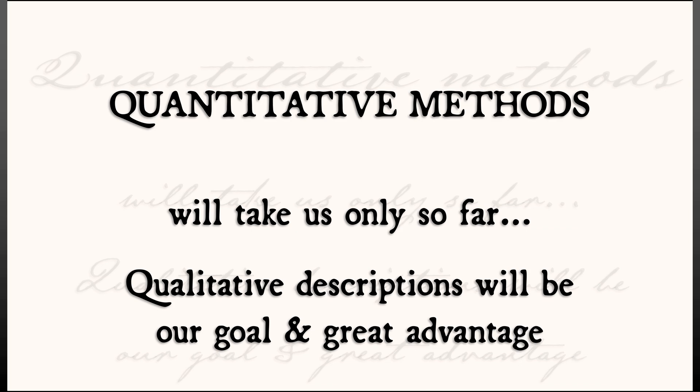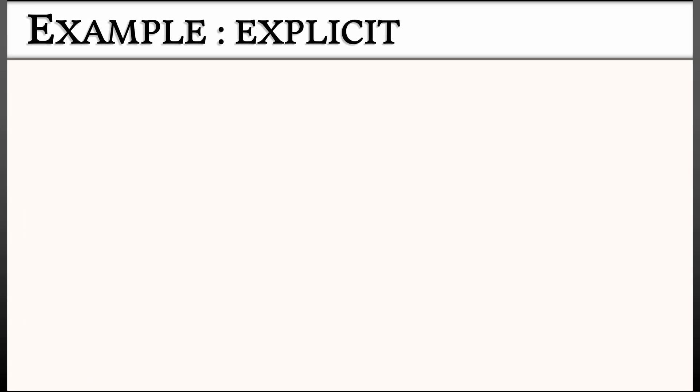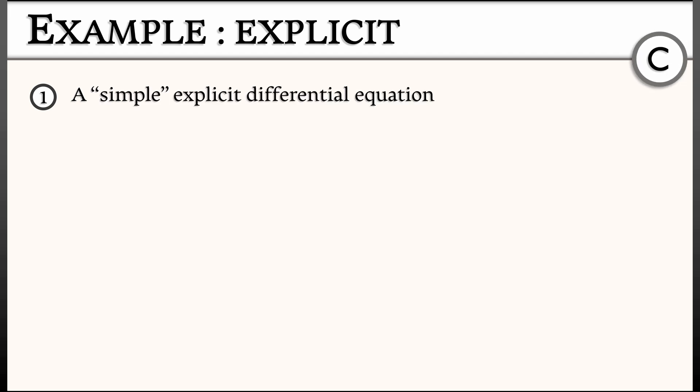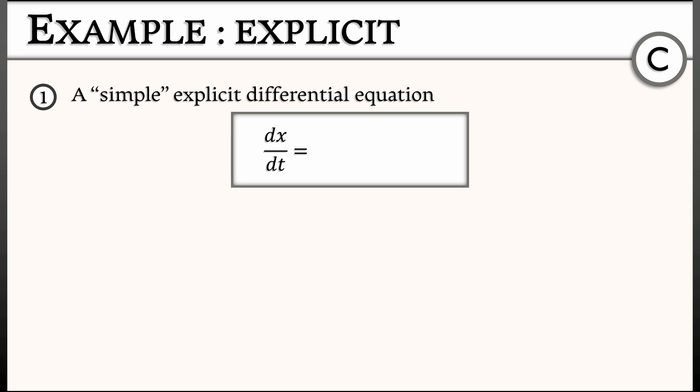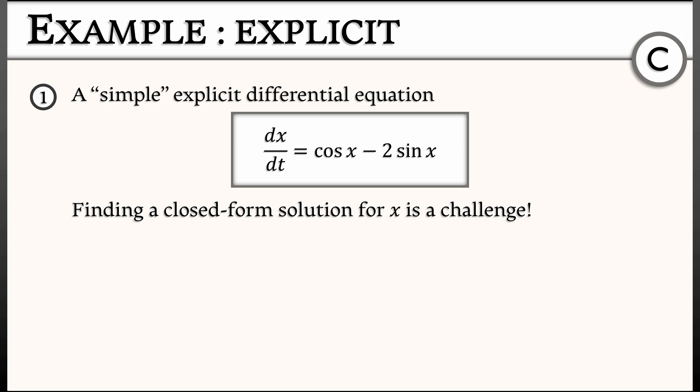What do I mean by that? Consider a very explicit example of a dynamical system — a continuous time system represented by a simple differential equation on one variable, x as a function of t. Let's say you've got the differential equation dx/dt equals cosine of x minus 2 sine of x. Don't worry about where that comes from, but do worry about how you would solve such an equation — trying to find an exact quantitative closed form solution for x is really quite a challenge.